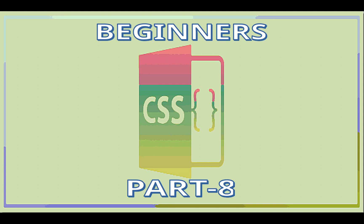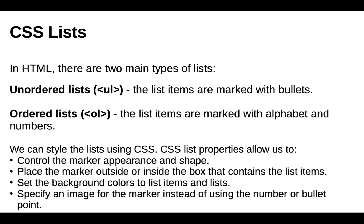Hello guys, welcome to my YouTube channel UAI Ninjas. In this video I am going to discuss about CSS lists. In HTML there are two main types of list: first is unordered and next is ordered list. Unordered lists are marked with bullets and ordered lists are marked with alphabets and numbers. If you want to learn about HTML lists, you can refer to my previous video link mentioned in the description box.